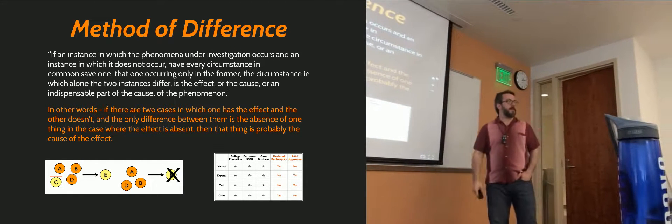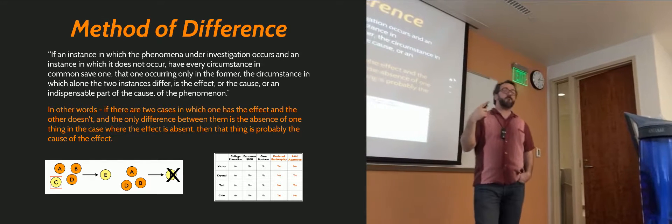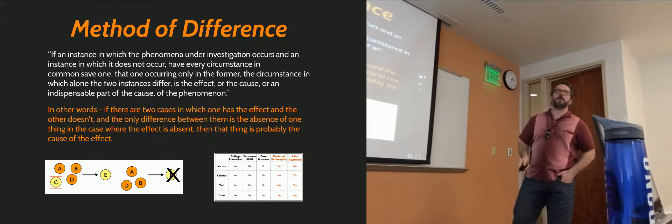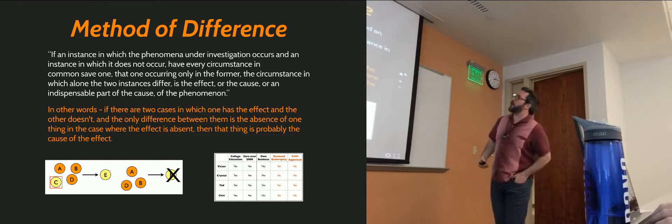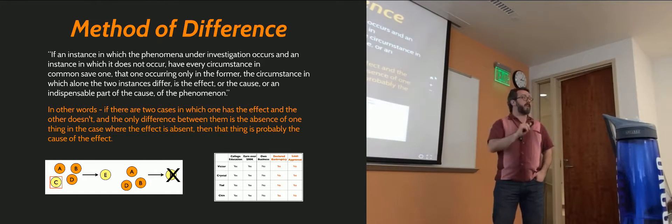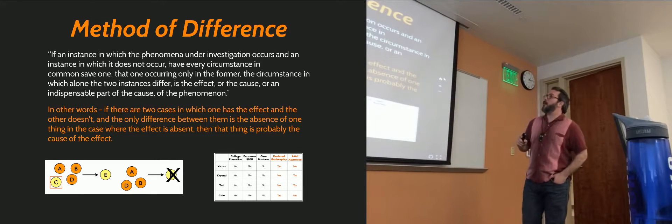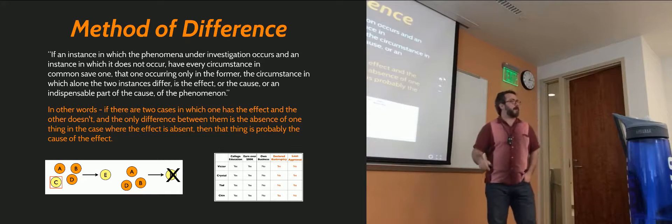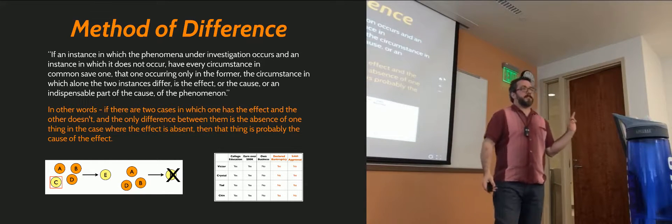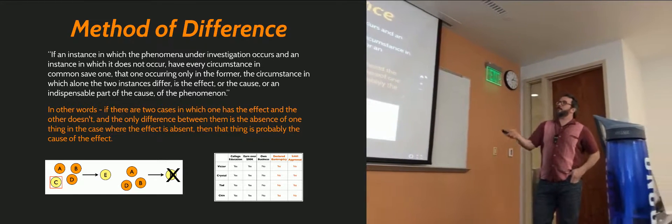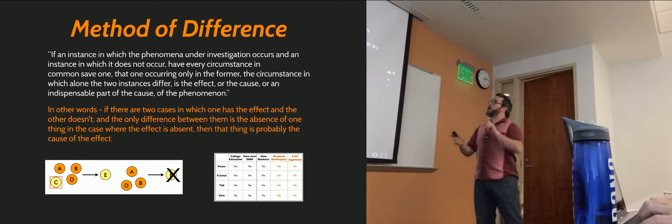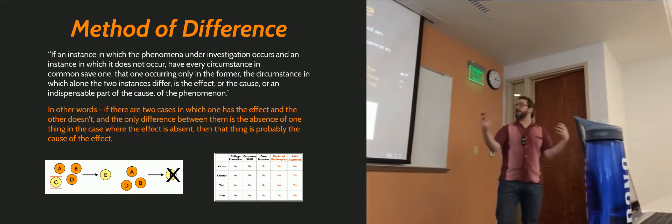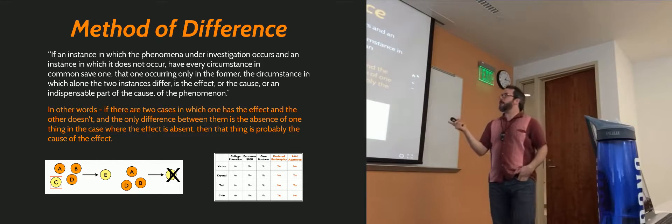In addition to the method of agreement, there's also a method of difference. Here's Mill: 'If an instance in which the phenomenon under investigation occurs and an instance in which it does not occur have every circumstance in common save one, that one occurring only in the former, the circumstance in which alone the two instances differ is the effect or the cause, or an indispensable part of the cause of the phenomenon.' In other words, if the only difference between a case where the effect is present and one where it's absent is the absence of one other thing, then that thing is probably the cause.